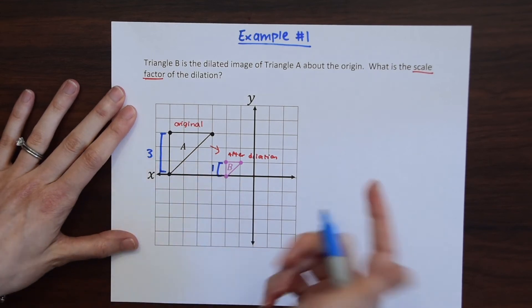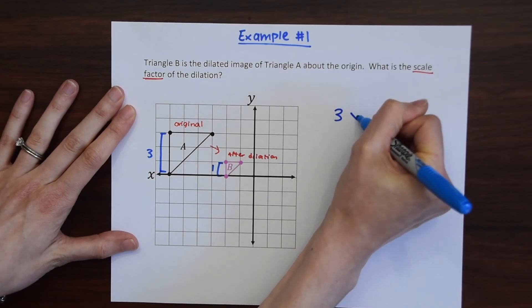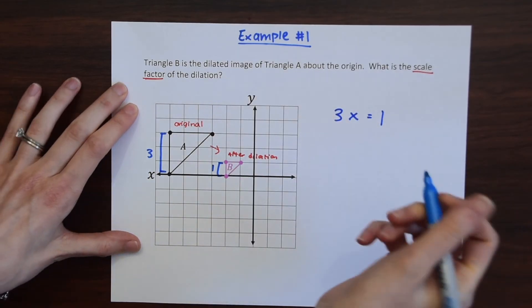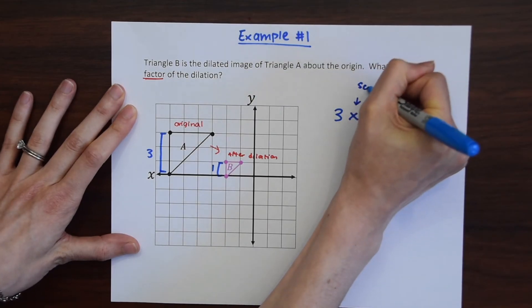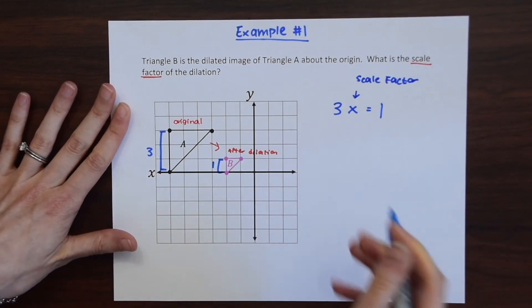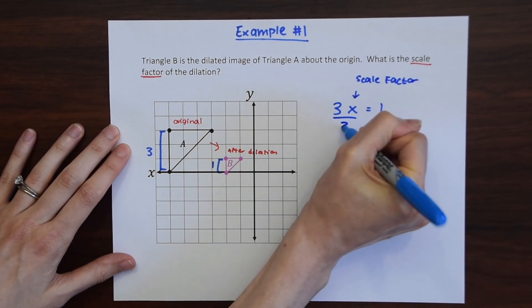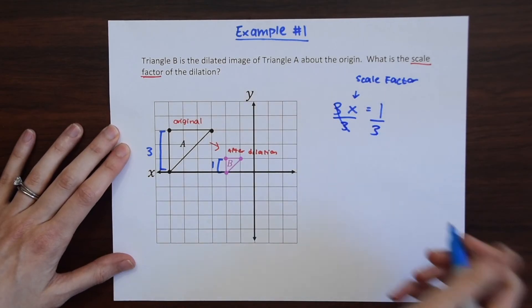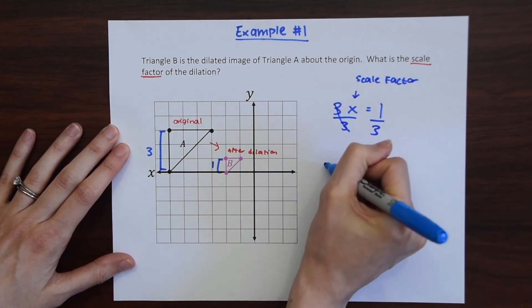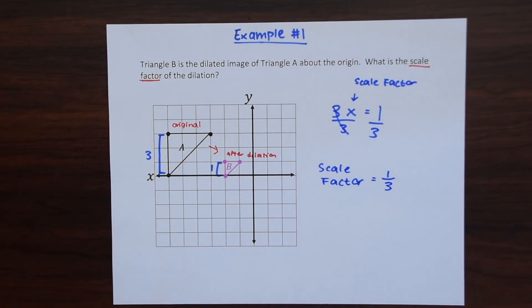So we need to ask ourselves three times what gave us one? And this what here is the scale factor. So looking at it this way this is super easy to solve. We're just going to divide three on both sides and we know that the scale factor was one third and that's our answer.